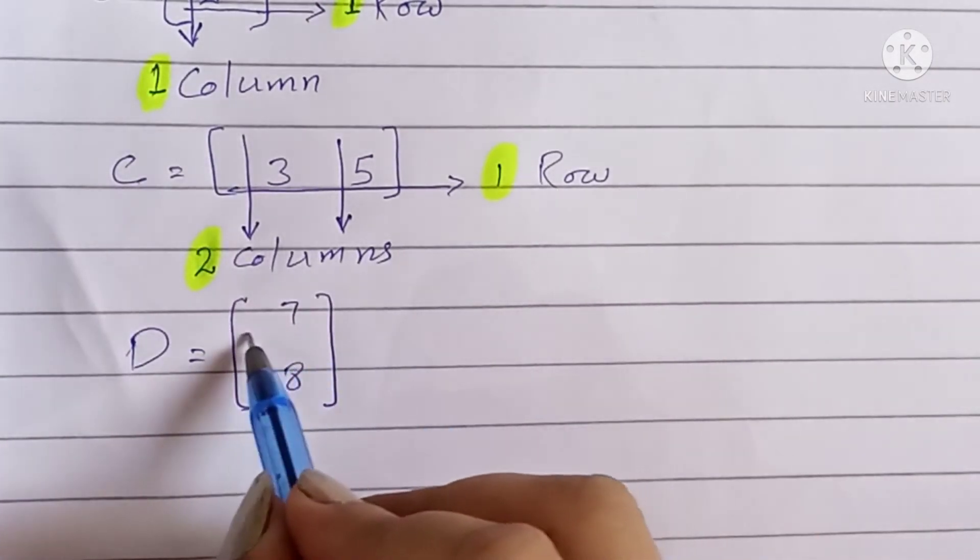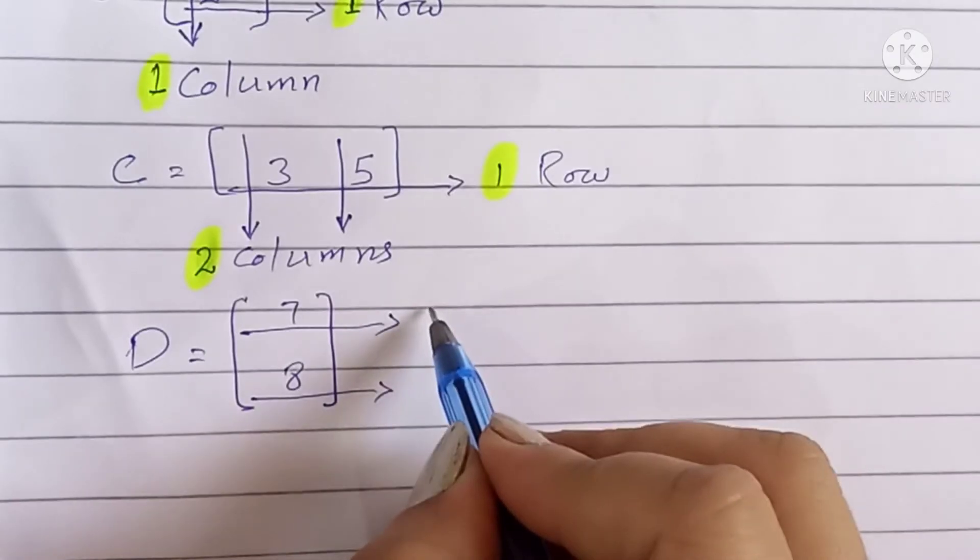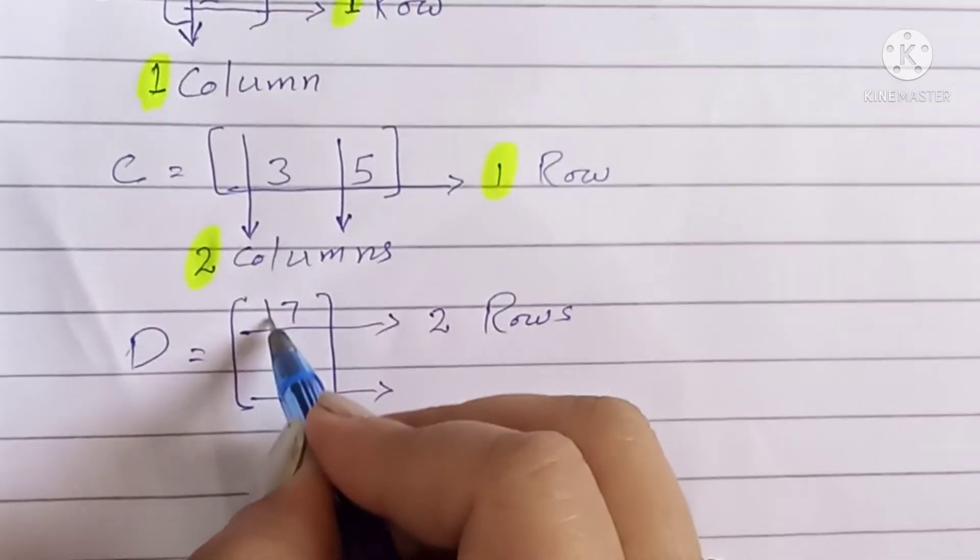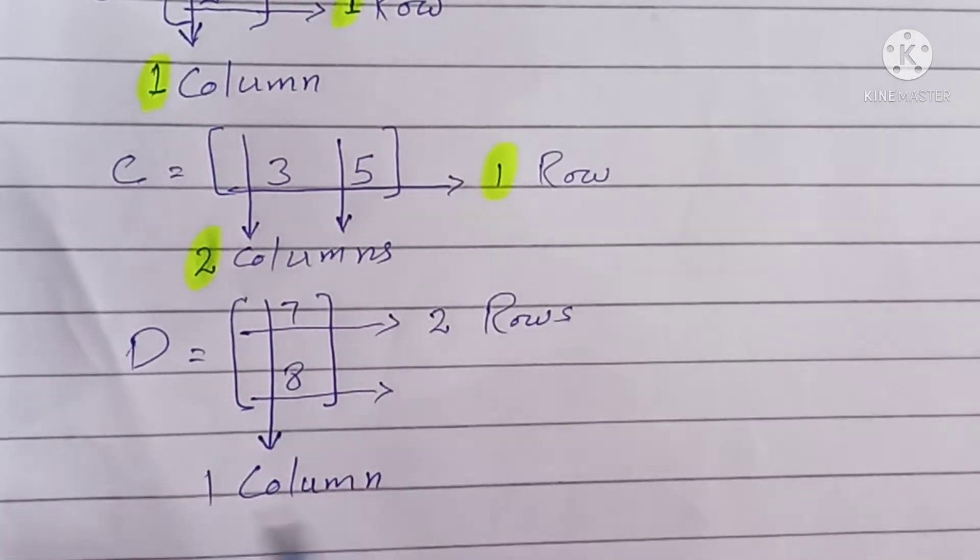I write here another matrix D. Its rows are 7 and 8. It has two rows and just one column.